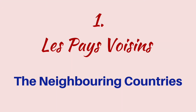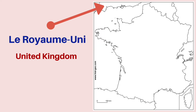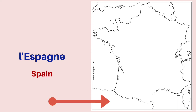Let's look at the neighboring countries of France — les pays voisins. Towards the northwest, you have the United Kingdom, le Royaume-Uni. Towards the southwest, you have Spain, l'Espagne.